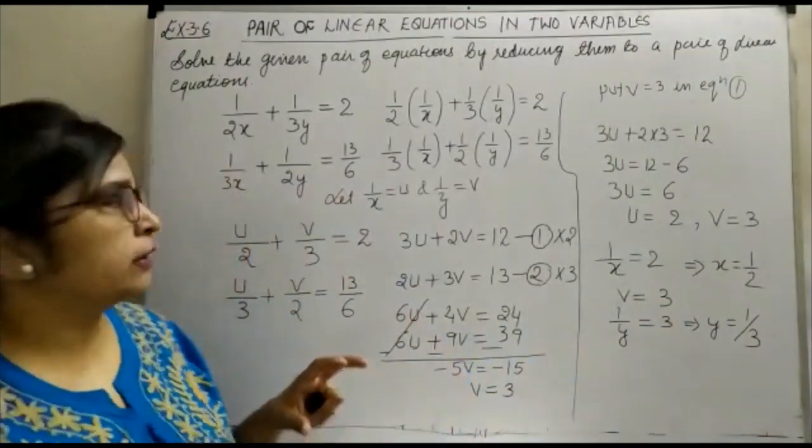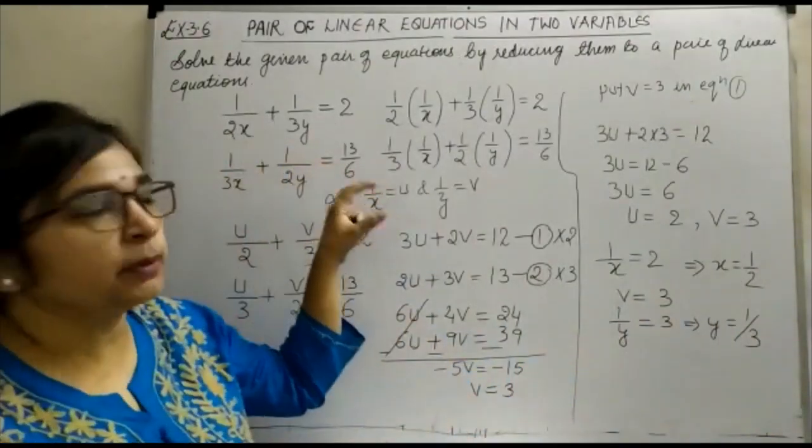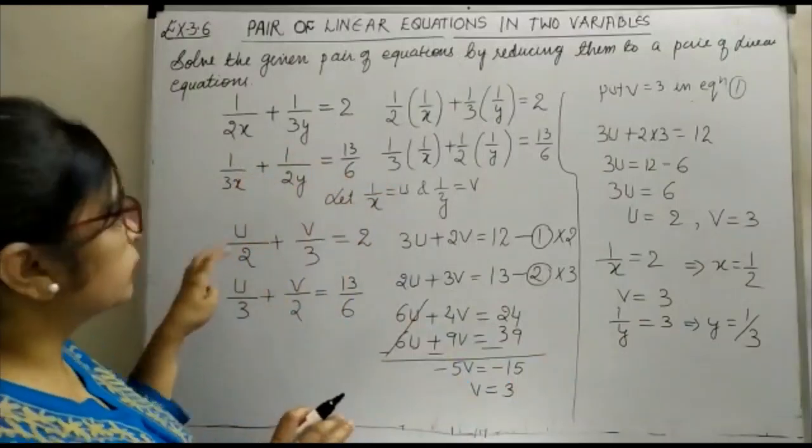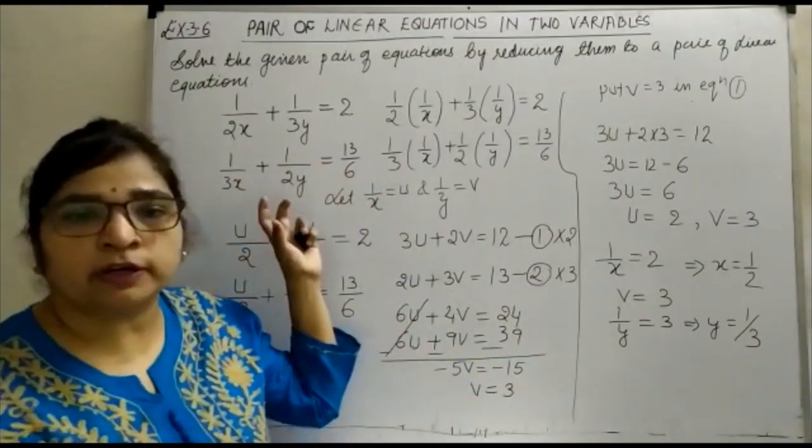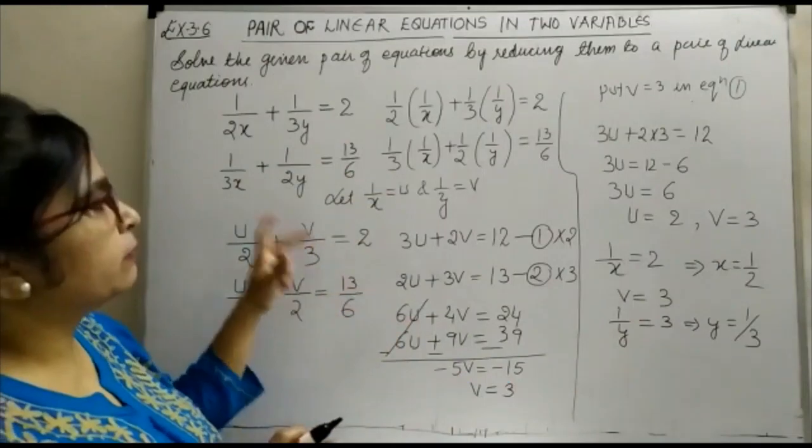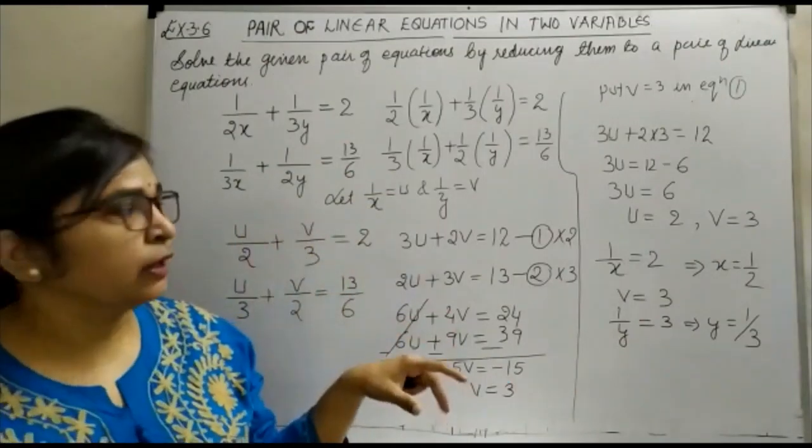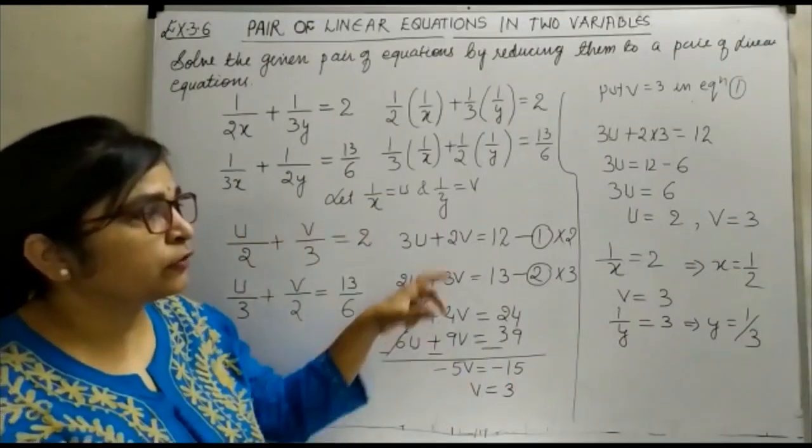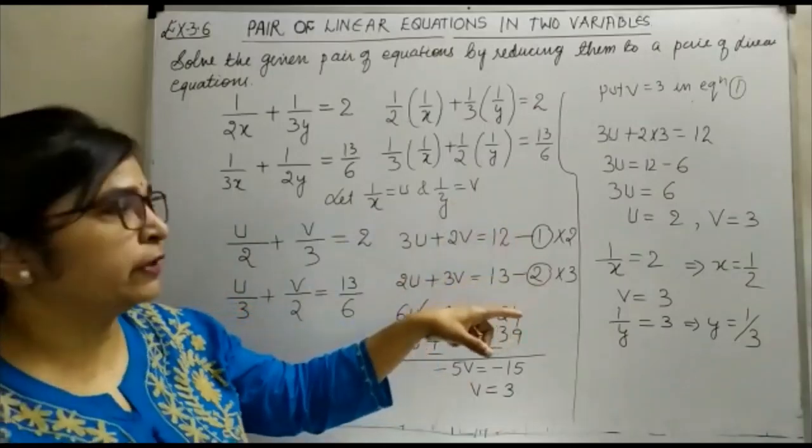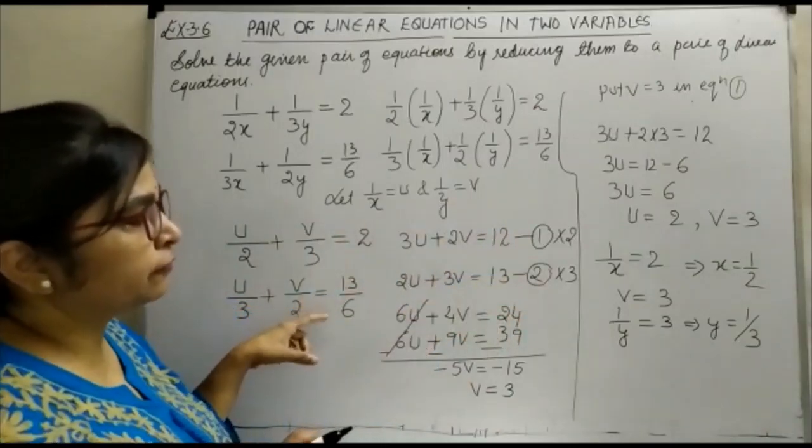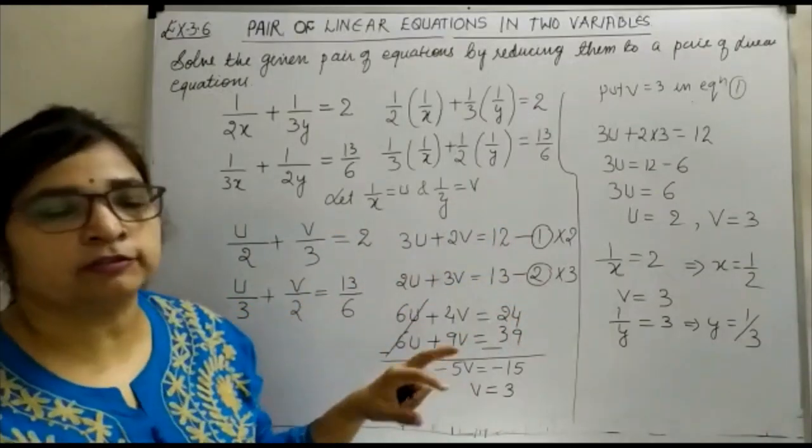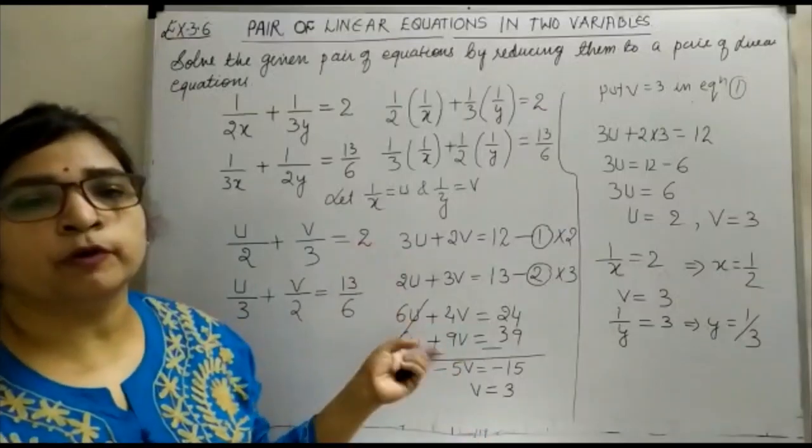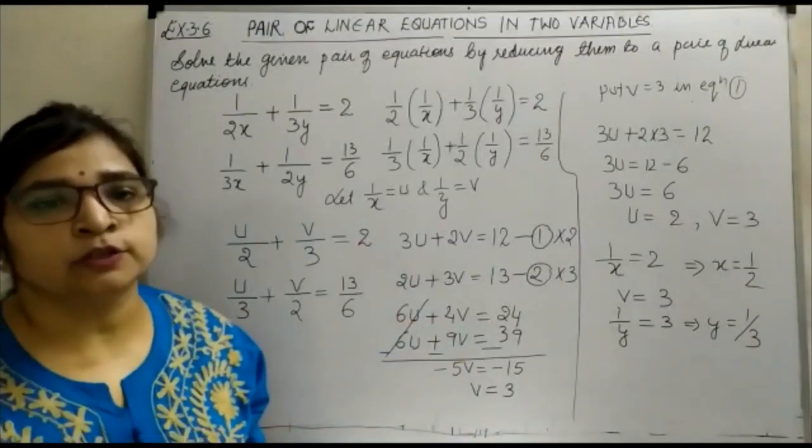Actually, we were supposed to find out the values of x and y, but as this equation is not a linear pair, so we have reduced the linear pair with the help of u and v. So first of all, we have worked out for the value of u and v and thereafter we have found out the value of x and y with the help of u and v. Thank you.